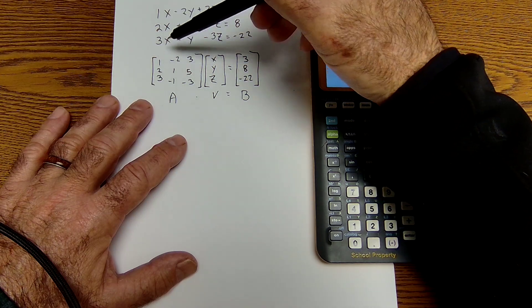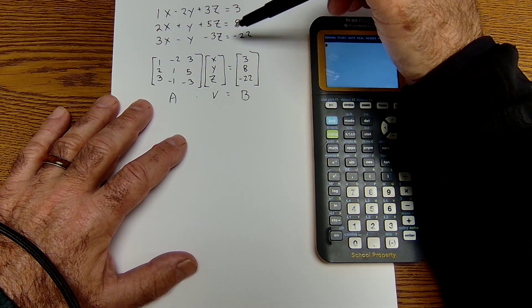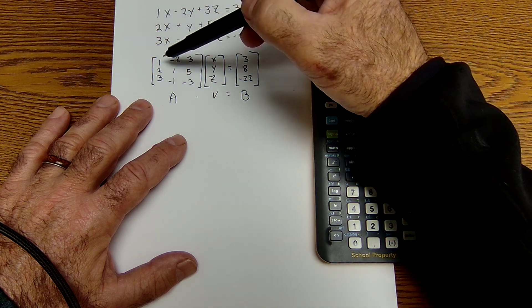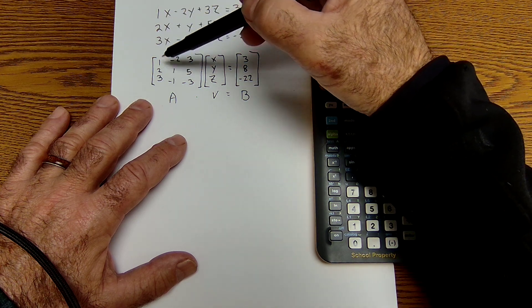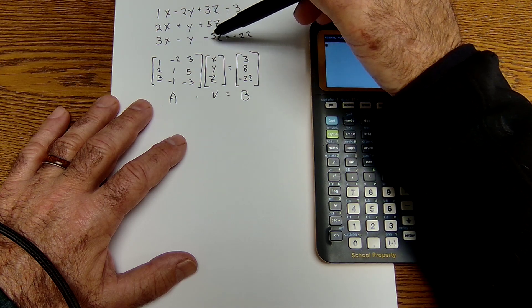So again, my x's are lined up, my y's, my z's, and they're equal to a number. Then I take all of the coefficients and create a coefficient matrix: 1, 2, 3, negative 2, 1, negative 1, 3, 5, negative 3, times a variable matrix